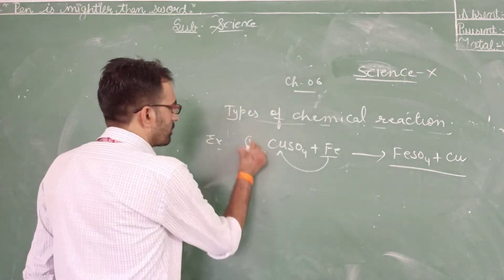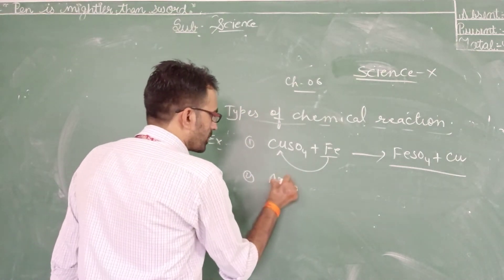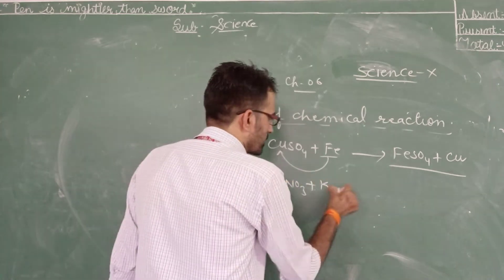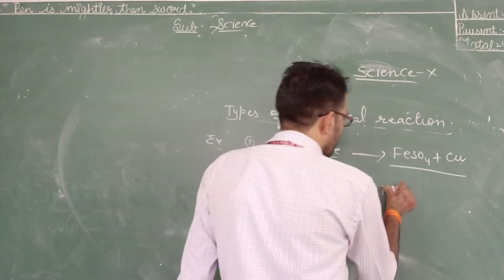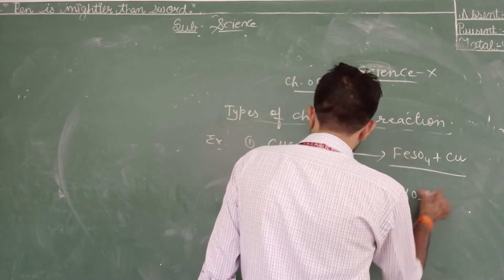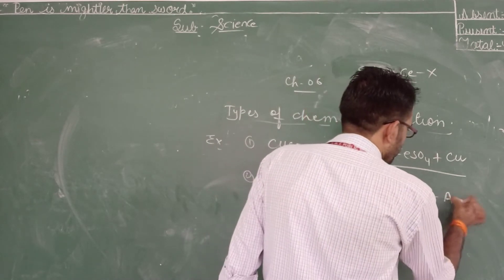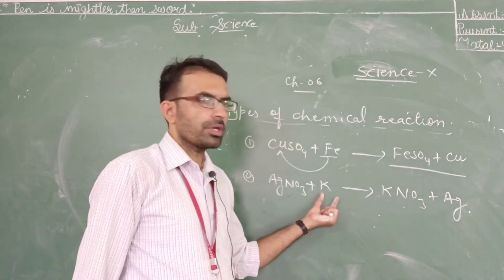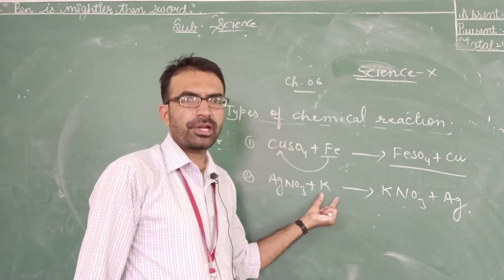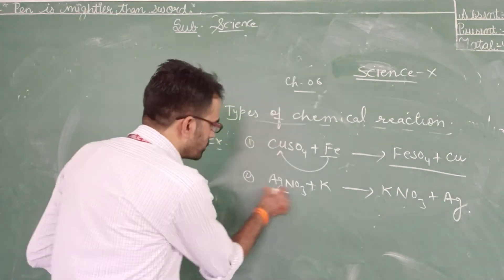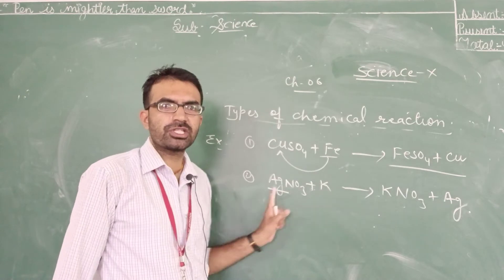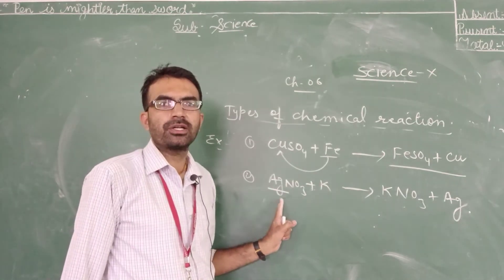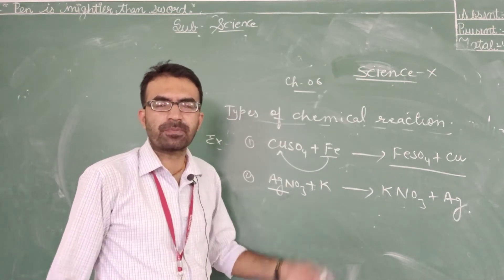We can take one more example: AgNO3 plus K. Here the compound formed will be KNO3 plus Ag. In this displacement reaction, K is more reactive than Ag, so K replaces Ag in the compound.